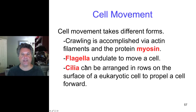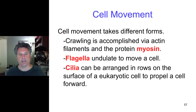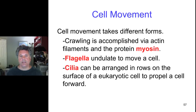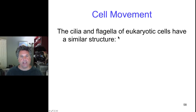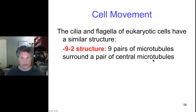Both cilia and flagella are bounded by plasma membrane that has been extruded and extended. Both have a very similar microtubular structure consisting of microtubules, which are polymers of the alpha and beta tubulin proteins. Both cilia and flagella have a particular arrangement of microtubules called the 9+2 structure, in which nine pairs of microtubules with slightly different diameters surround a pair of central microtubules.